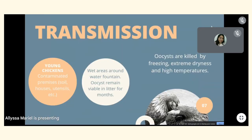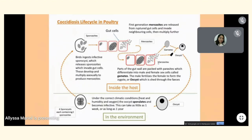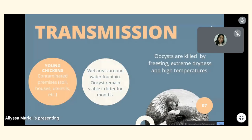For transmission, young chickens can be infected with coccidia through contaminated premises such as soil, houses, utensils, and wet areas around water fountains. Oocysts remain viable in litter for months. Oocysts are killed by freezing, extreme dryness, and high temperature, but they need oxygen, humidity, and heat to survive.